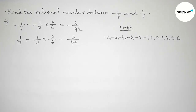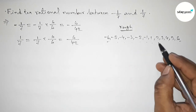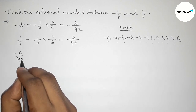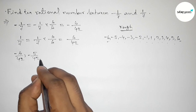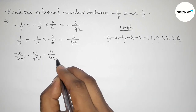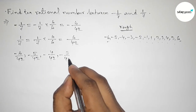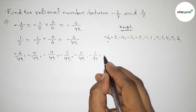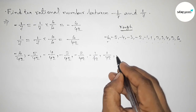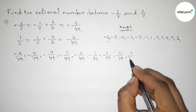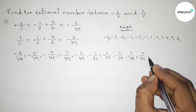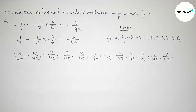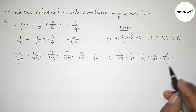So these are the 10 integers. First of all, write down all the rational numbers: the first one is minus 6 by 42, then minus 5 by 42, then minus 4 by 42, then minus 3 by 42, then minus 2 by 42, then minus 1 by 42. So the last one is 6 by 42.